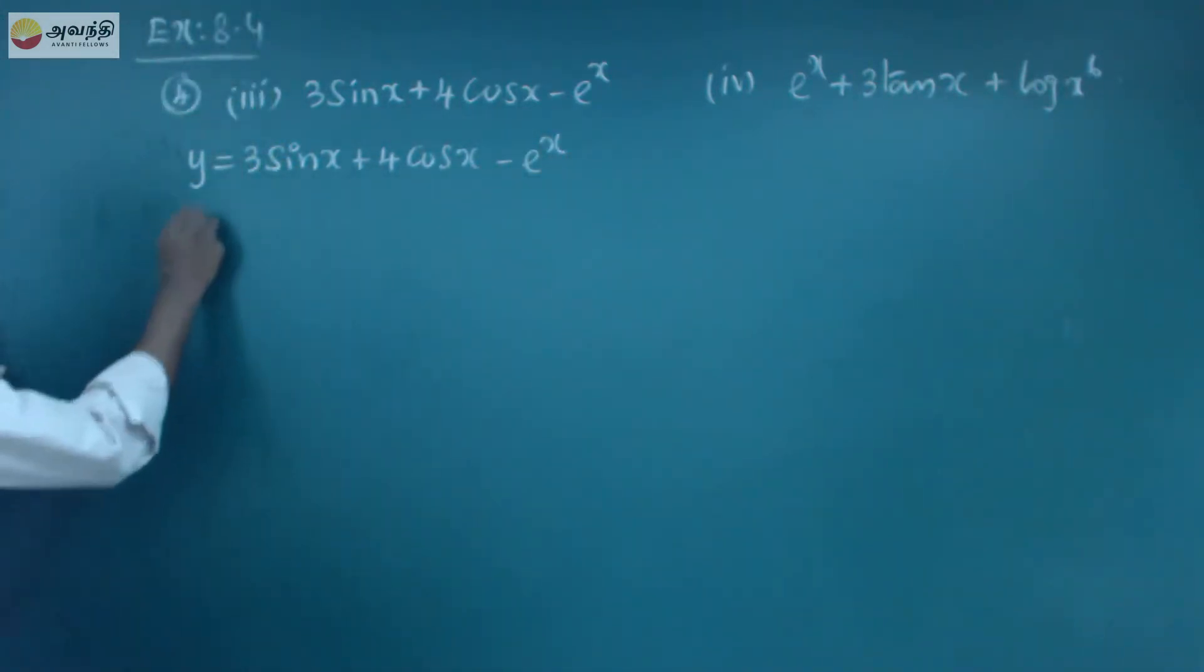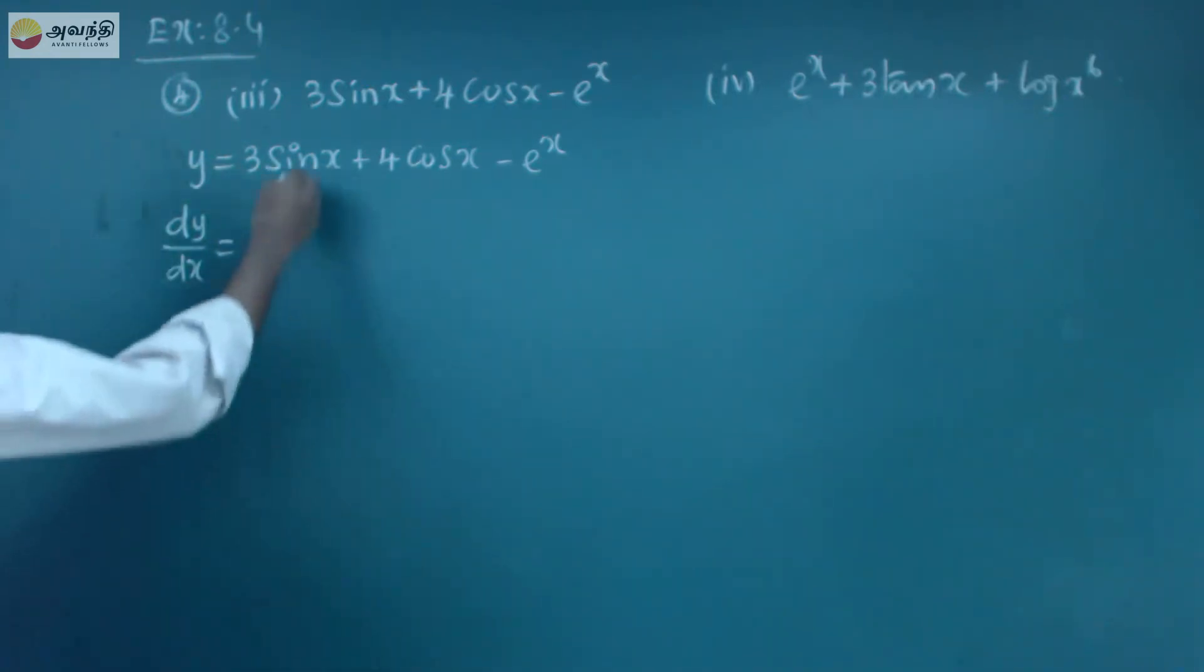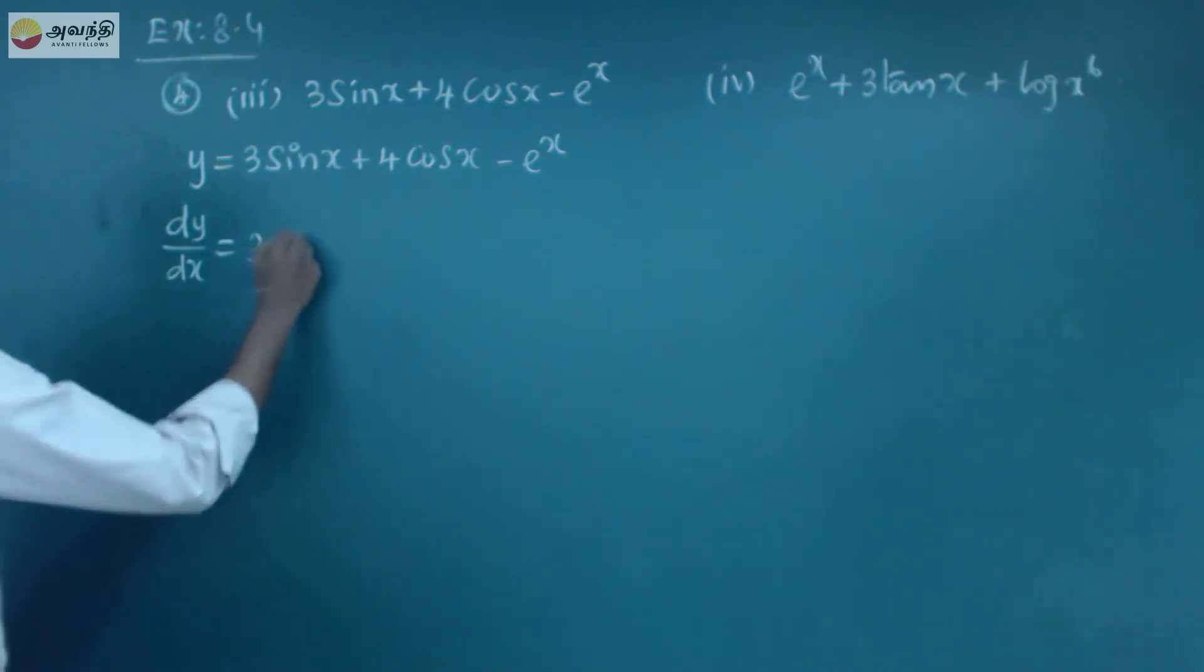So differentiation palla, that is dy by dx equal to, so differentiation palla 3 sin x. 3 is constant, sin x kodha multiple hundhukha, anala 3 apd eitha arukko, so sin x differentiation panna nama kenna theriyo, cos x.